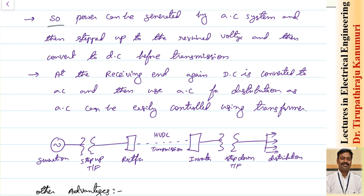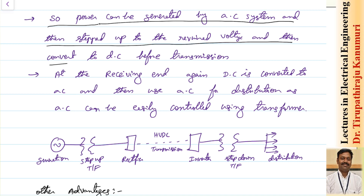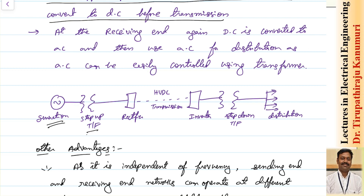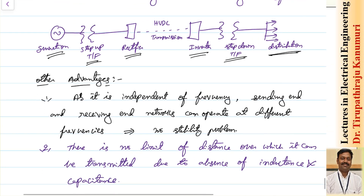The better solution to avoid the commutation problem is to go for AC generation — generally three-phase AC is used, because for a given rating the machine size is smaller and more power can be produced. The AC system is stepped up to the required voltage, then converted to DC before transmission. So the scheme is: generation → step-up transformer → rectifier → DC long-distance transmission → inverter at the receiving end → step-down transformer → distribution system. This is the best way of operating using DC.